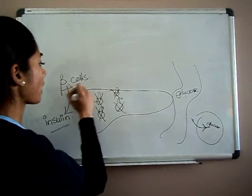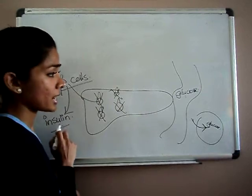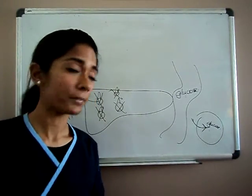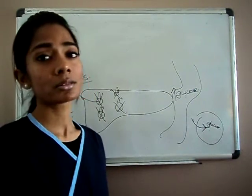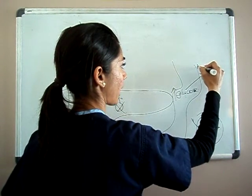So if you have no beta cells, then your body will not be able to produce insulin. And if you can't produce insulin, then your glucose can't enter the cell. So you end up with an increased amount of glucose in your bloodstream, which leads to hyperglycemia.